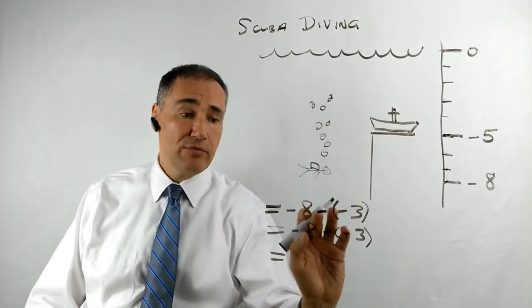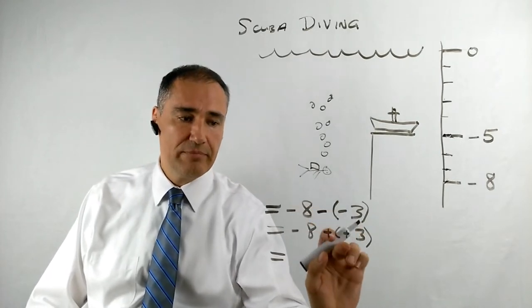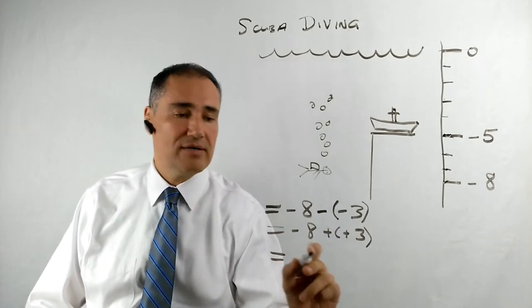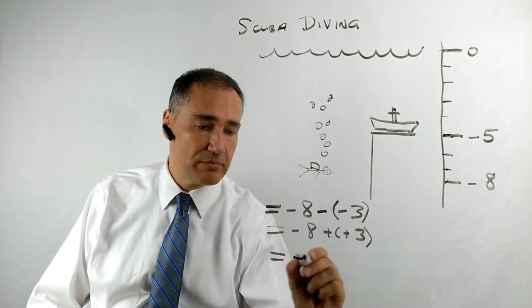So we know the math rule. Whenever we have two consecutive negative signs, or two negative signs in a row, we flip the signs to positives. So that just leaves us with minus eight plus three, which is minus five.